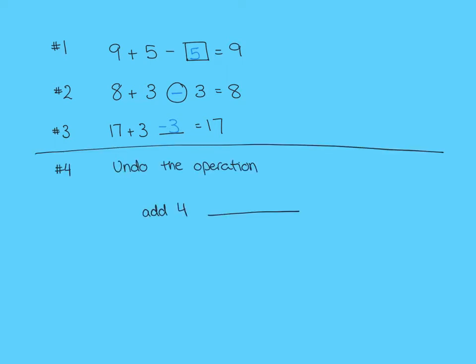Question 4 will take it to the next step by changing it into words. So they'll ask you to undo the operation. So to undo adding 4, if we think of these, the opposite of adding would be subtracting. So on the line, you would write subtract 4.